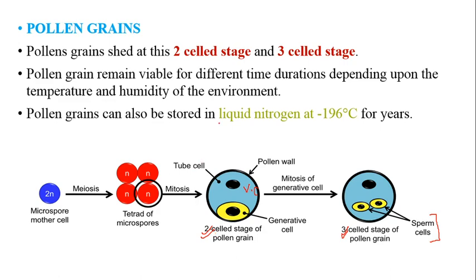Pollen grains can remain viable for different periods of time depending on their environment, temperature, and humidity. In most species, and especially for extinct species, pollen grains of plants are being preserved so that if a species is going extinct, the pollen grains can be germinated and used to increase the number of that species. Pollen grains are being stored in liquid nitrogen at minus 196 degrees Celsius, and this preservation technique allows the pollen grains to stay viable for thousands of years.